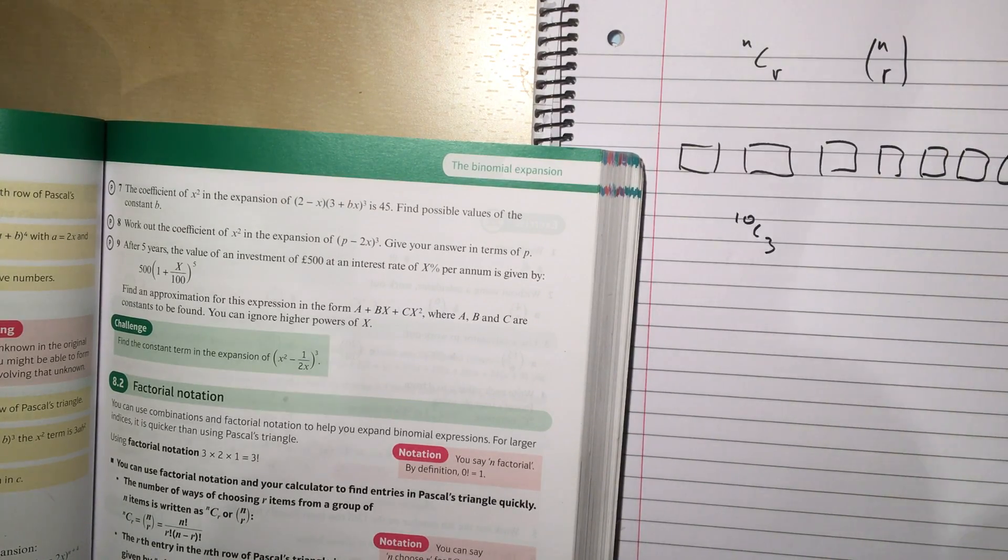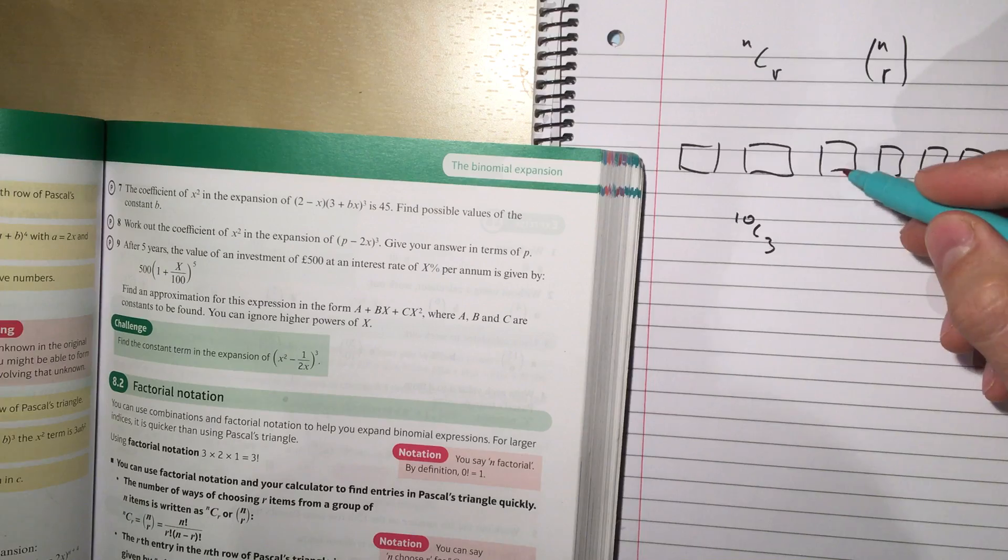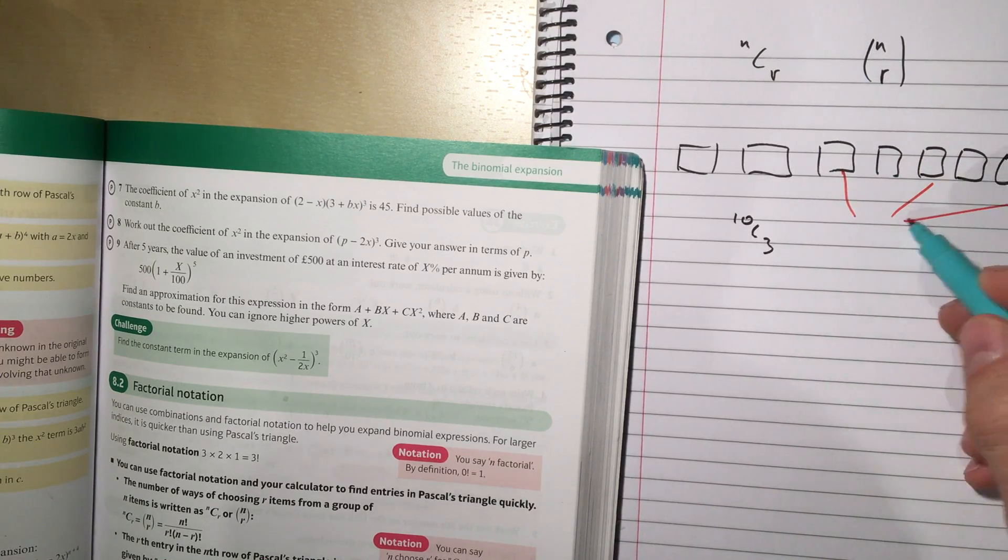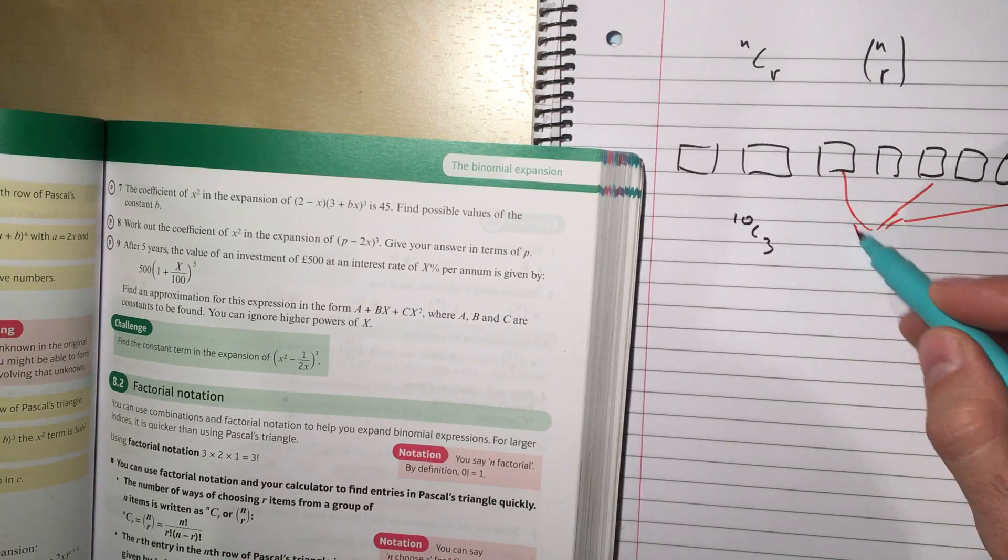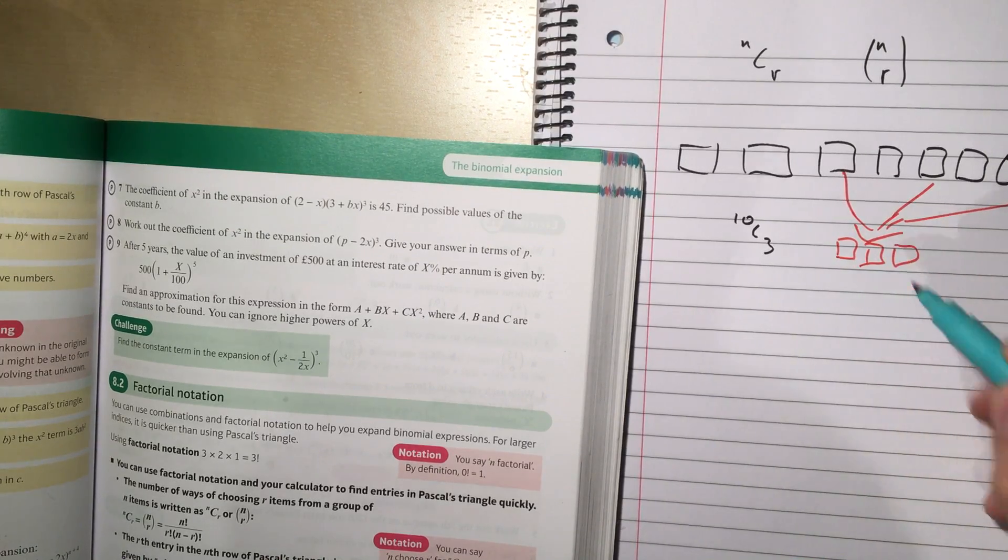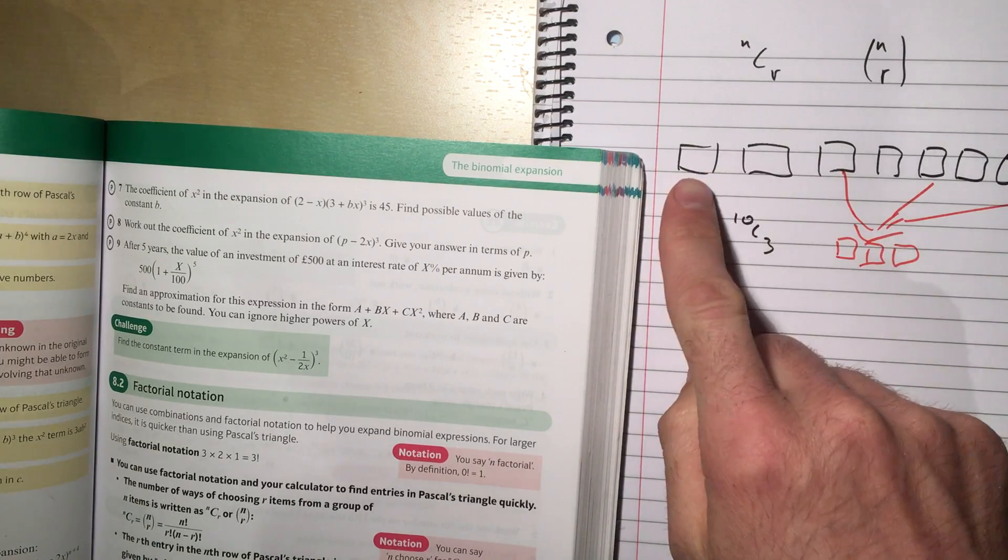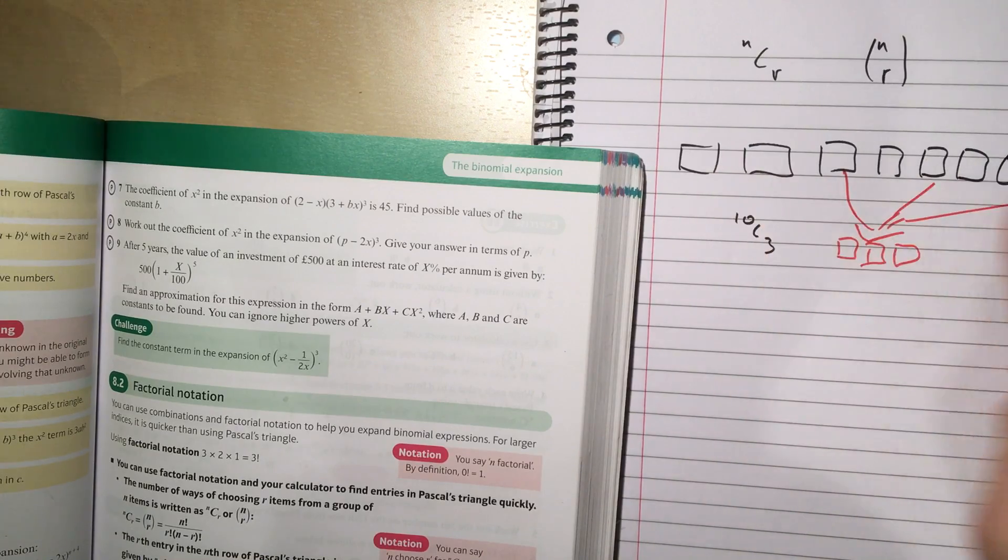And you need to pick 3 of those things. So say this one, this one, and this one. That would be my choice, those 3. And the question is, how many ways are there of picking 3 things out of this list of 10?